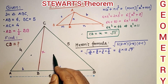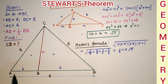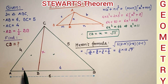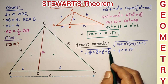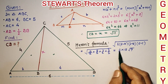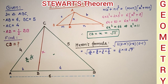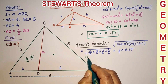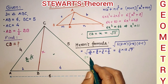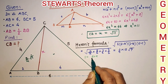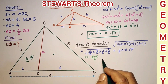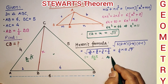Since the base AD = 2 and DB = 4, the area of triangle ACD to the area of triangle ADB is in ratio 1 to 2. So the area of triangle ACD is one-third of the total area, which is (1/3) × (15/4)√7 = (5/4)√7. Now we apply Heron's formula again to triangle ACD, where the sides are 2, x, and 4. So S = (4 + 2 + x)/2 = (6 + x)/2.